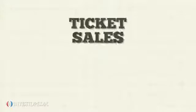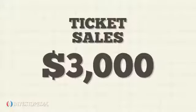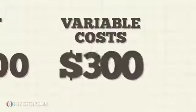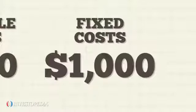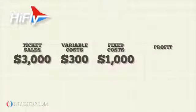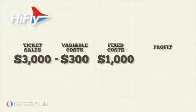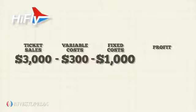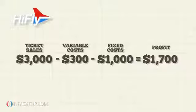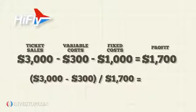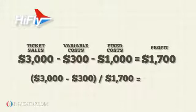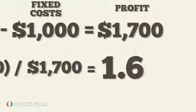If Hi-Fly earns ticket sales of $3,000 and has variable costs of $300 and fixed costs of $1,000, then its profit is $3,000 minus $300 minus $1,000, which equals $1,700. Its DOL is $3,000 minus $300 divided by $1,700, which equals 1.6.